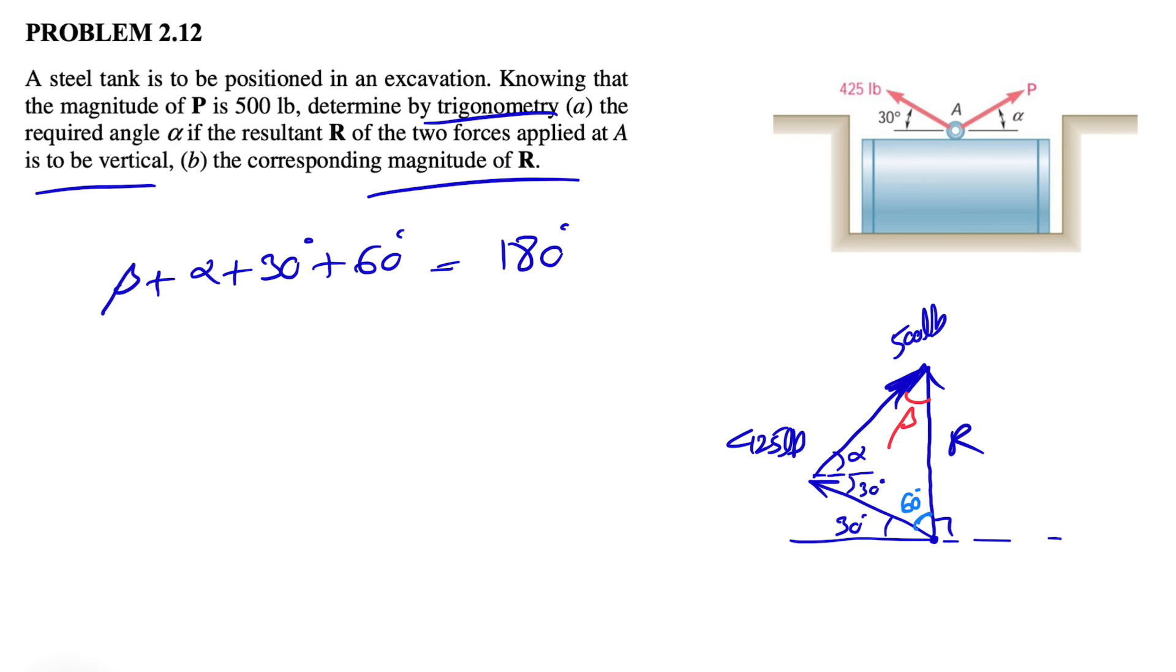So we can find beta based on alpha. Our beta would be 180 minus 60 minus 30 degrees minus alpha, or 180 minus 90 will be 90 degrees minus alpha.